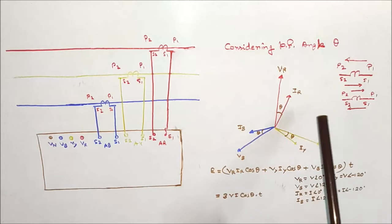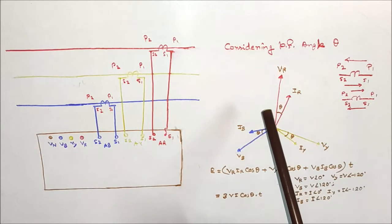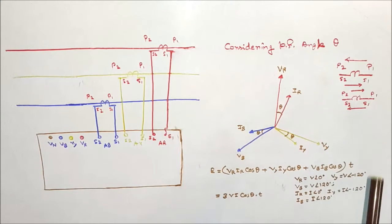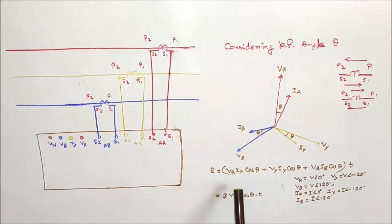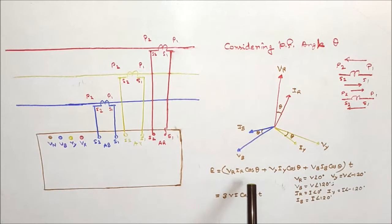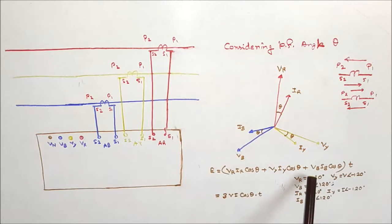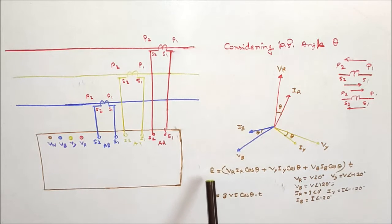For the feeder connection, current is flowing from P1 to P2. The total energy for time T is given by: red phase voltage times red phase current times cos(theta), plus yellow phase V-Y times I-Y times cos(theta), plus blue phase V-B times I-B times cos(theta). The total energy is equal to the sum of the three-phase power.